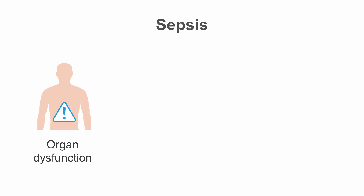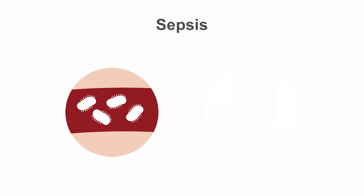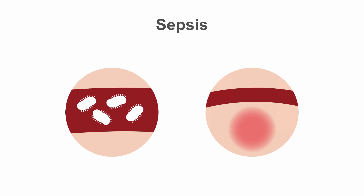Sepsis can best be defined as a systemic, deleterious host response to infection, which when severe can lead to acute organ dysfunction or septic shock, which is not easily reversed with fluid resuscitation. Septic shock carries a mortality of 40 to 70 percent. Many cases of sepsis are associated with bacteremia, but a focus of infection outside the bloodstream can cause the entire process.